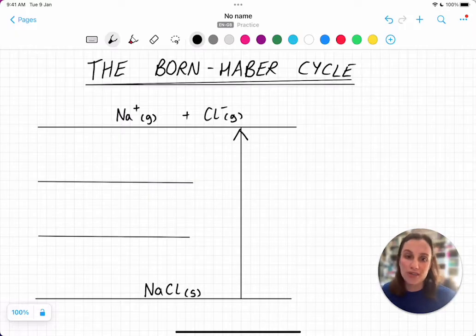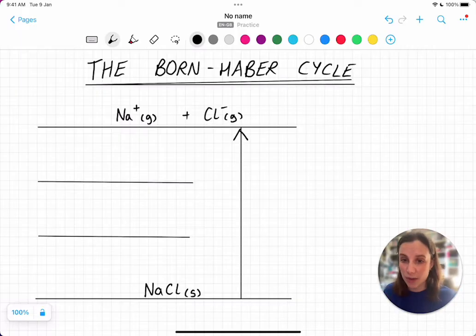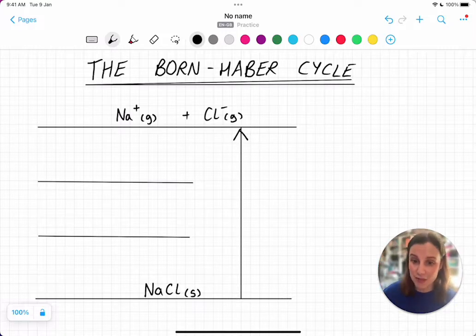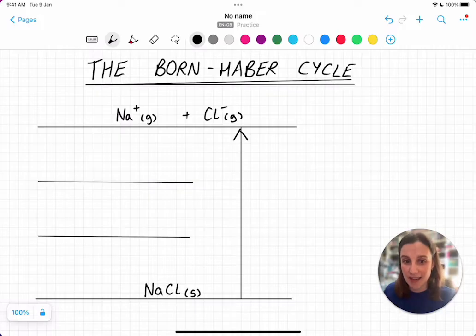If you look in the data booklet, all of the values for lattice enthalpy are positive values, they're endothermic. If you look at other syllabuses, sometimes it's defined the other way around. So don't get confused if you find random questions on the Internet that define lattice enthalpy differently. But we're defining it this way, going from the ionic lattice and breaking it apart into its gaseous ions.